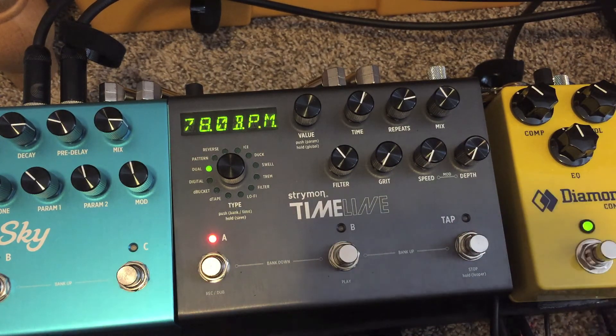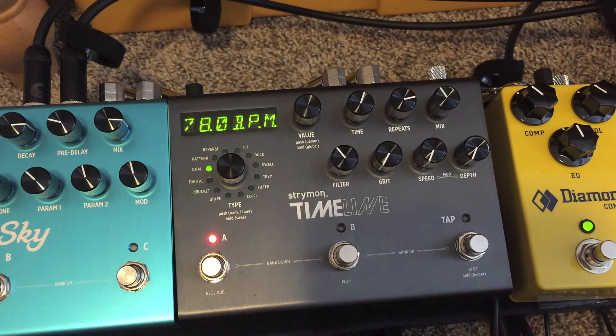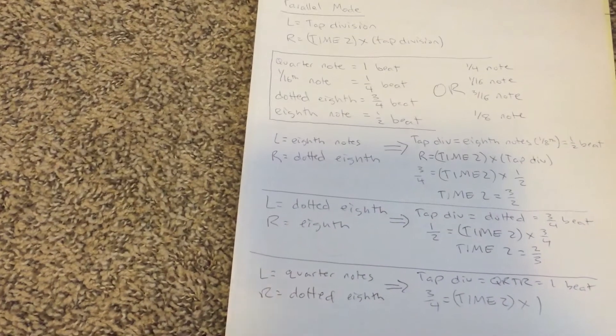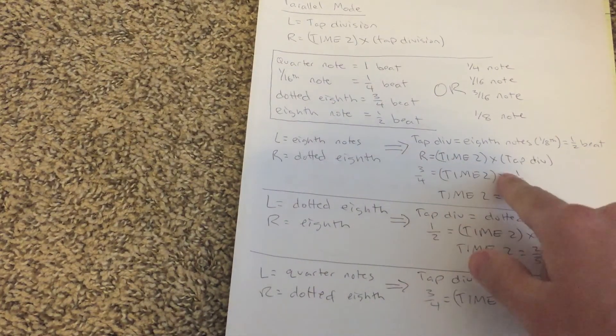It works. So you can, whatever, the tap tempo will follow whatever your song is, and you're going to get dotted eighths and eighth notes, or whatever you have it set to, using this magic equation.